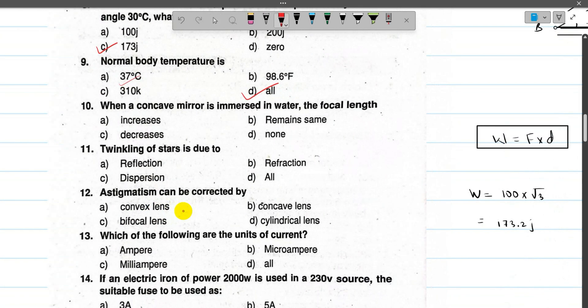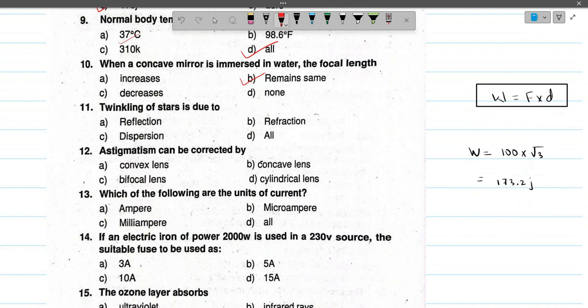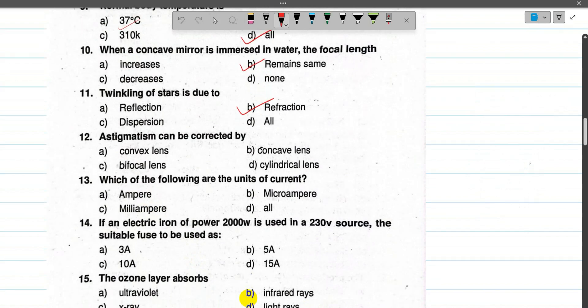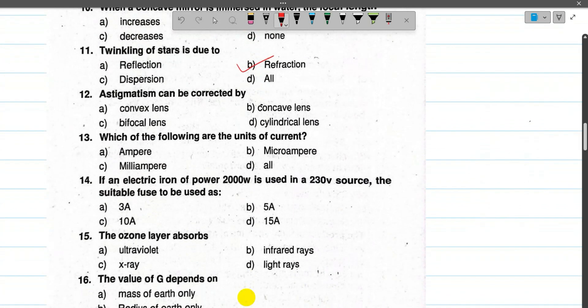Number 10: When a concave mirror is immersed in water, the focal length remains the same. The focal length does not change when immersed. The mirror depends on the curvature of the mirror, not on the medium. Number 11: The twinkling of stars is due to refraction of light in the atmosphere. It is a refractive mechanism, so that's why stars twinkle.